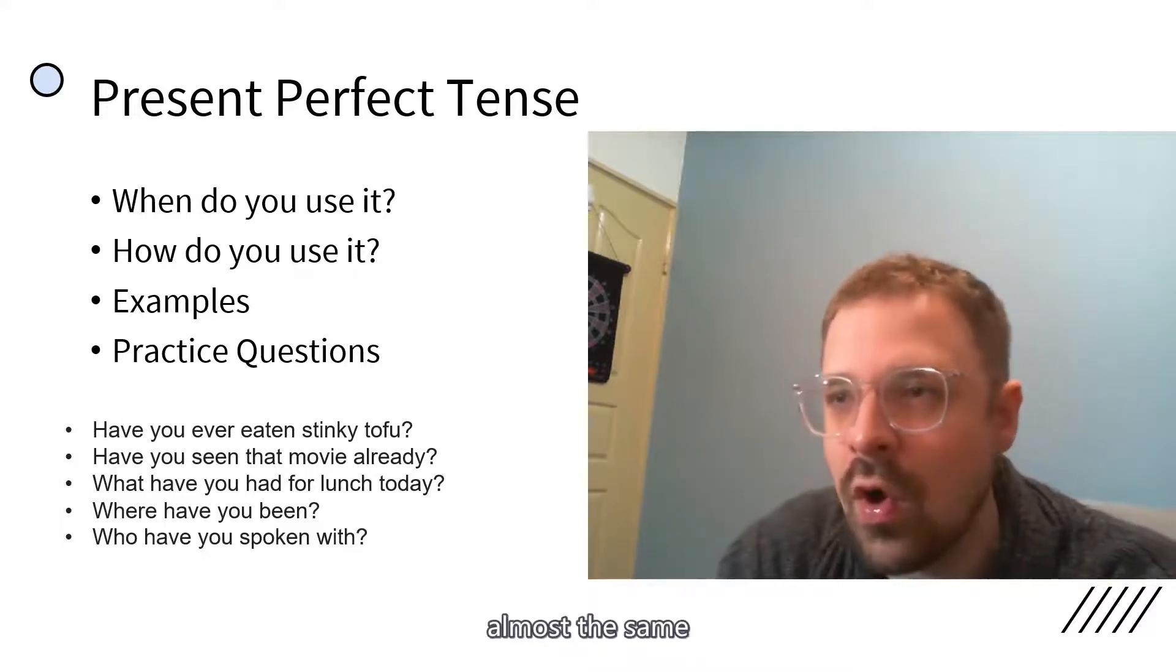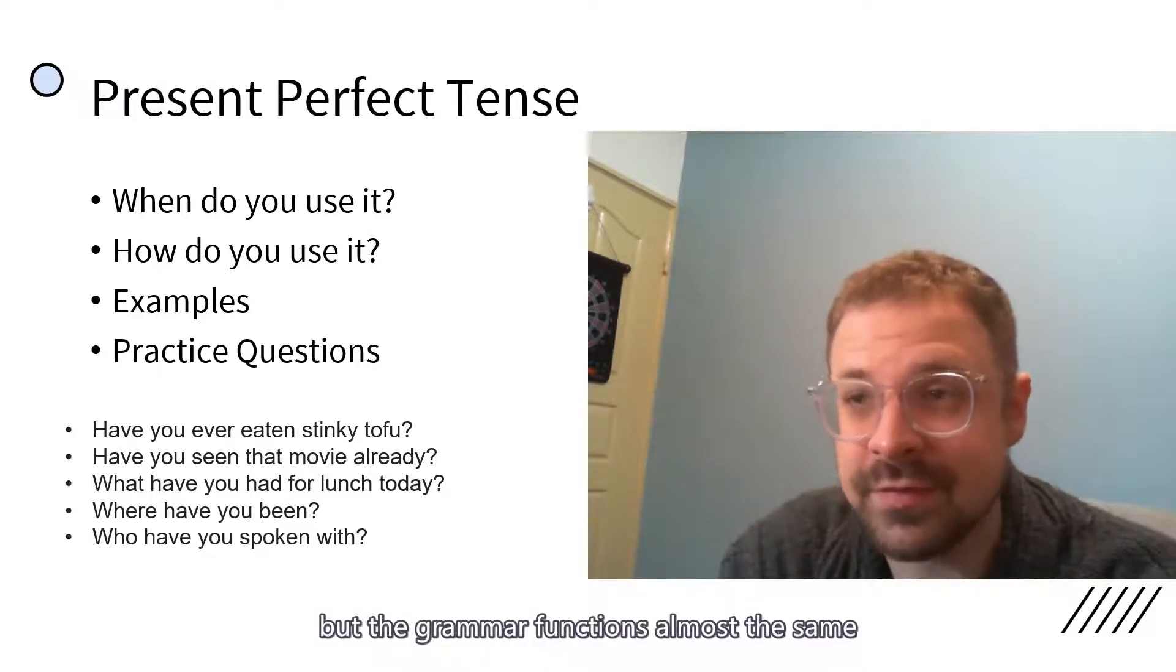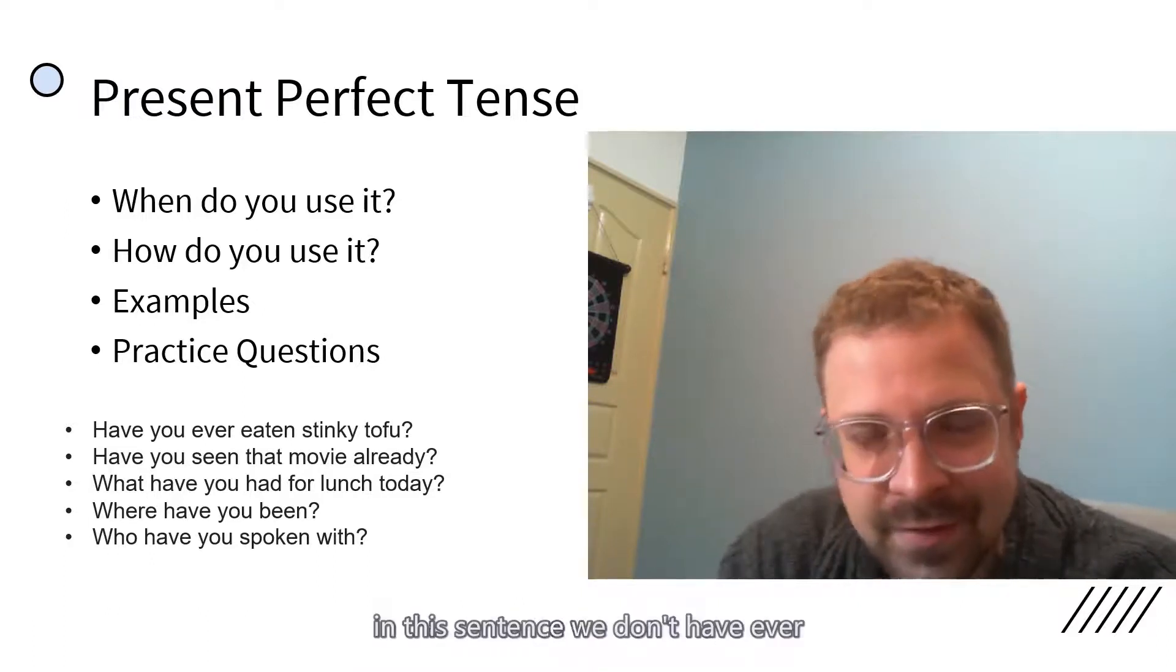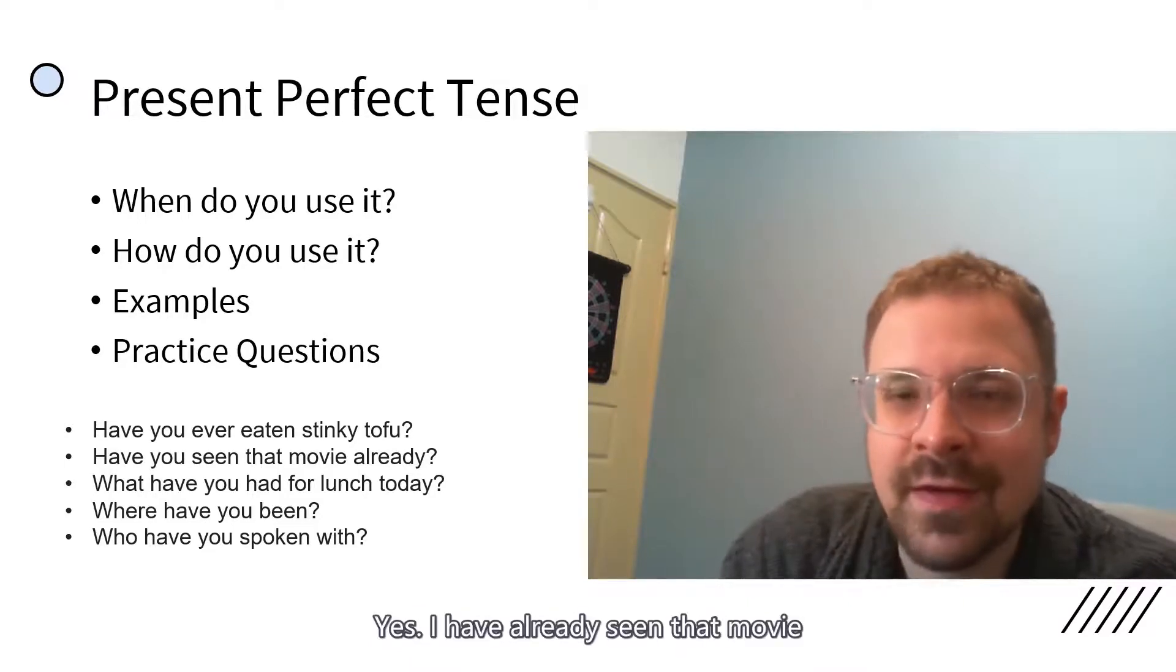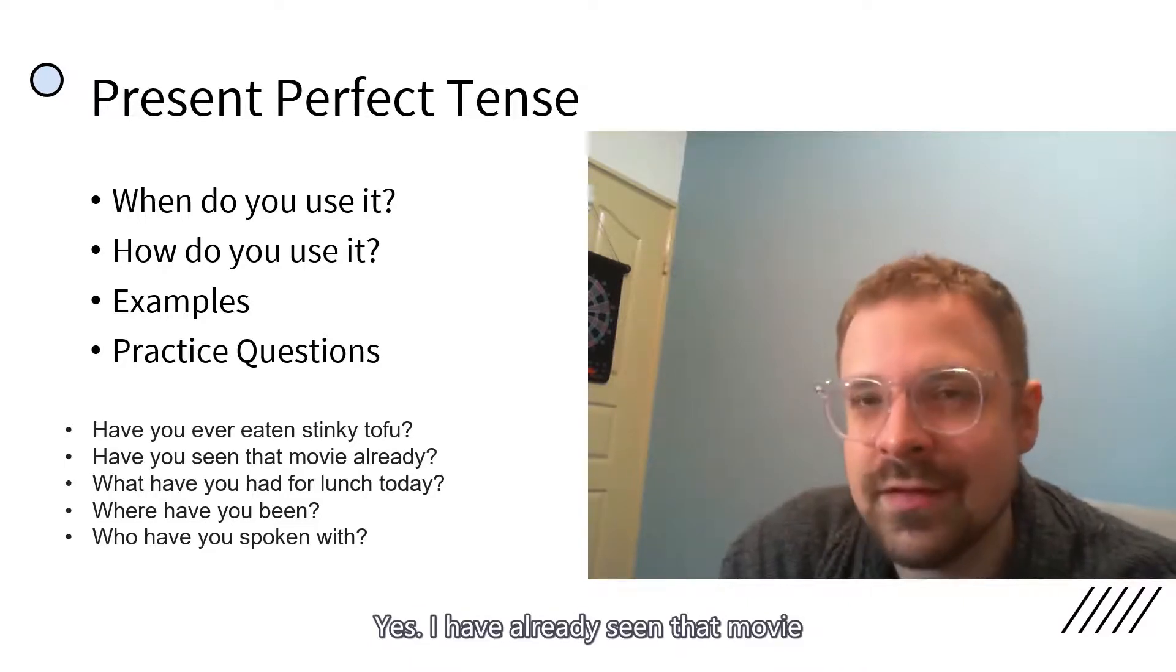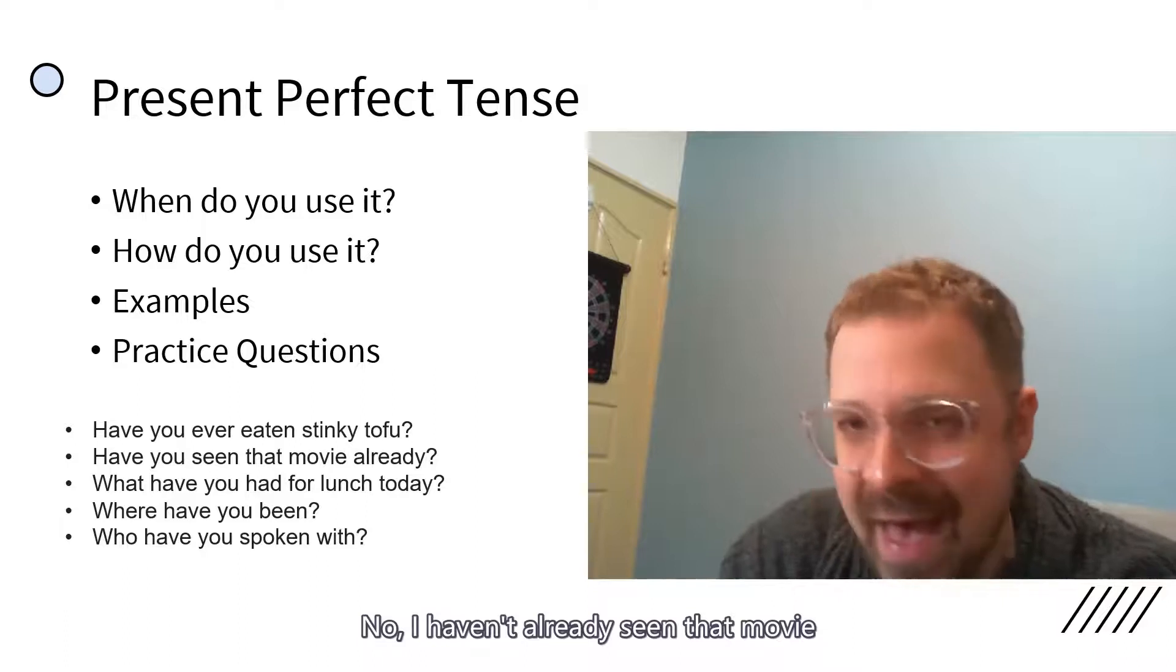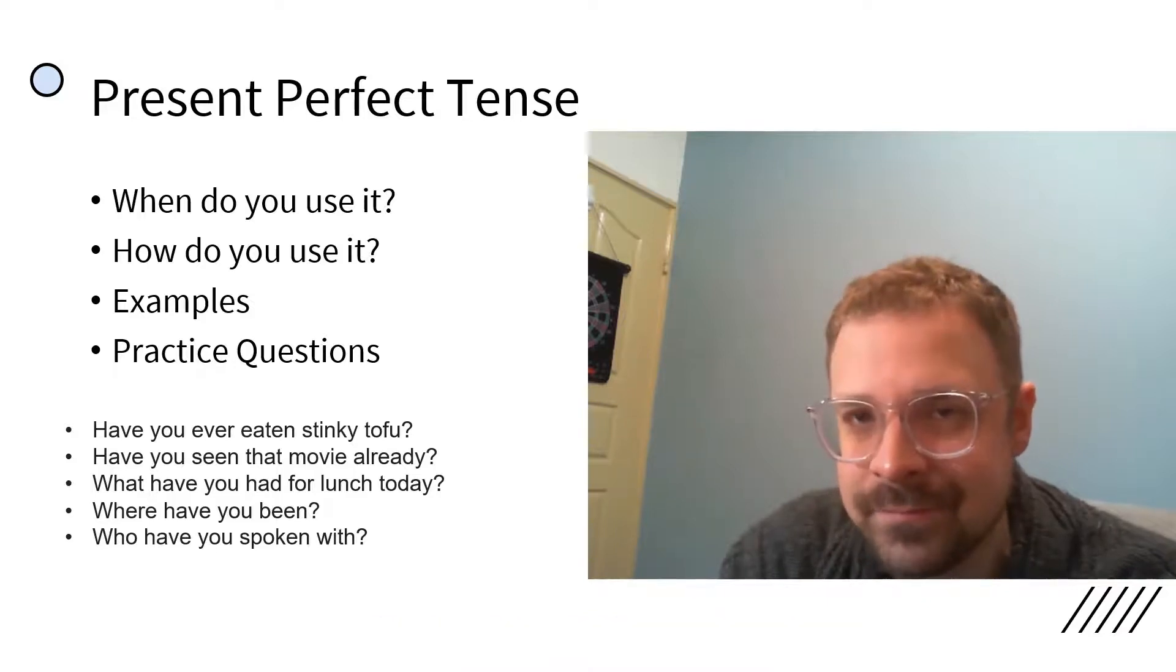Number two, almost the same. We don't have an ever in the sentence, but the grammar functions almost the same. Have you seen that movie already? In this sentence, we don't have ever. What we have is already. Yes, I have already seen that movie. Or I have seen that movie already. No, I haven't already seen that movie. Or no, I haven't seen that movie yet.